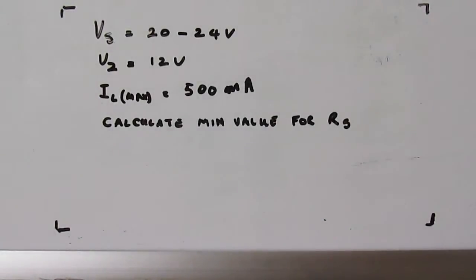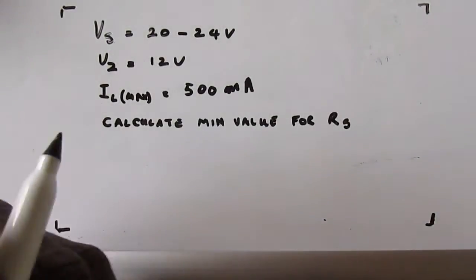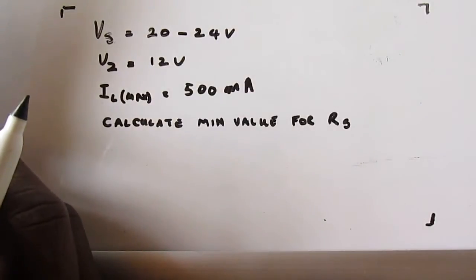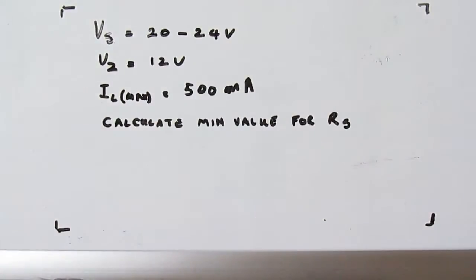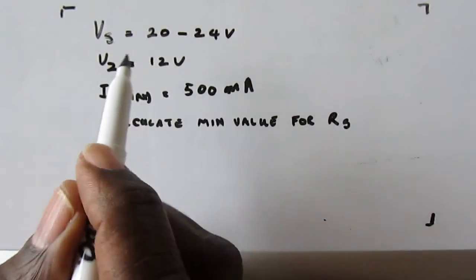In this lesson, we are going to carry out some calculations to determine the minimum value of RS for a supply that varies between 20 to 24 volts and for a maximum load of 500 milliamps. So here you see the requirements.